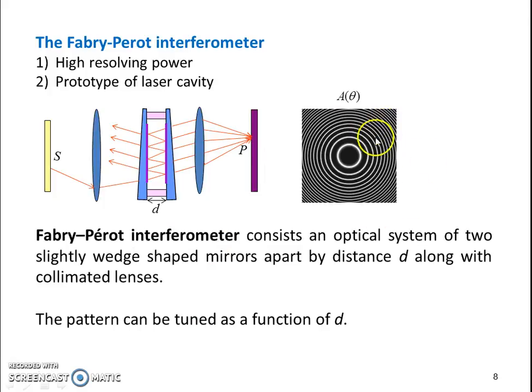The final pattern, which is the Airy function from this Fabry-Perot interferometer, looks like this. This pattern can be tuned by the separation between two plates of the Fabry-Perot interferometer.